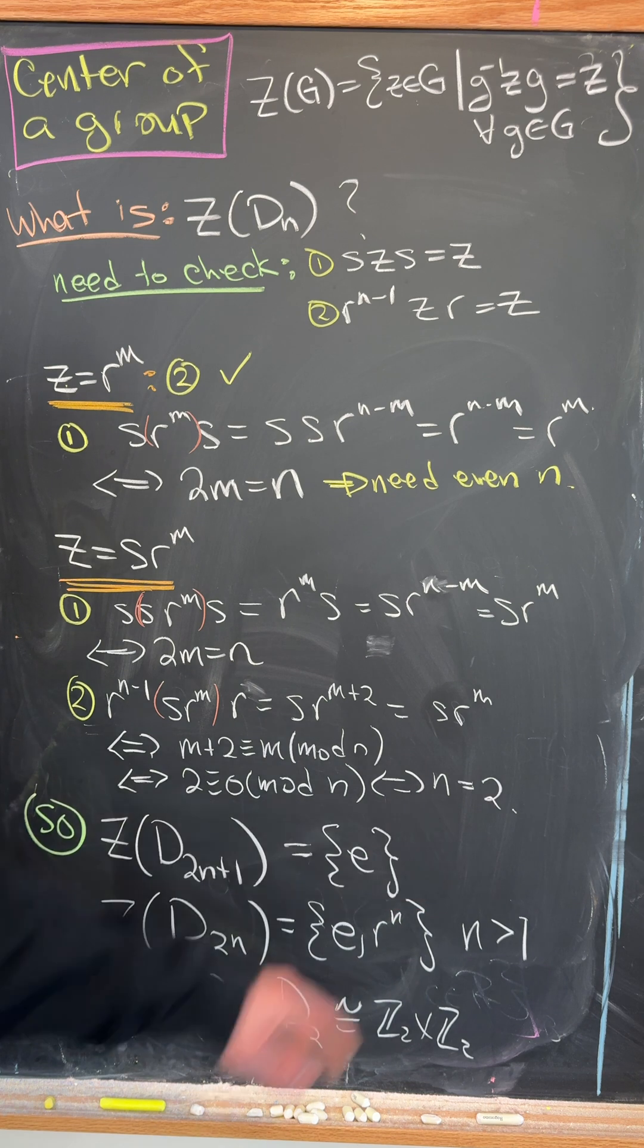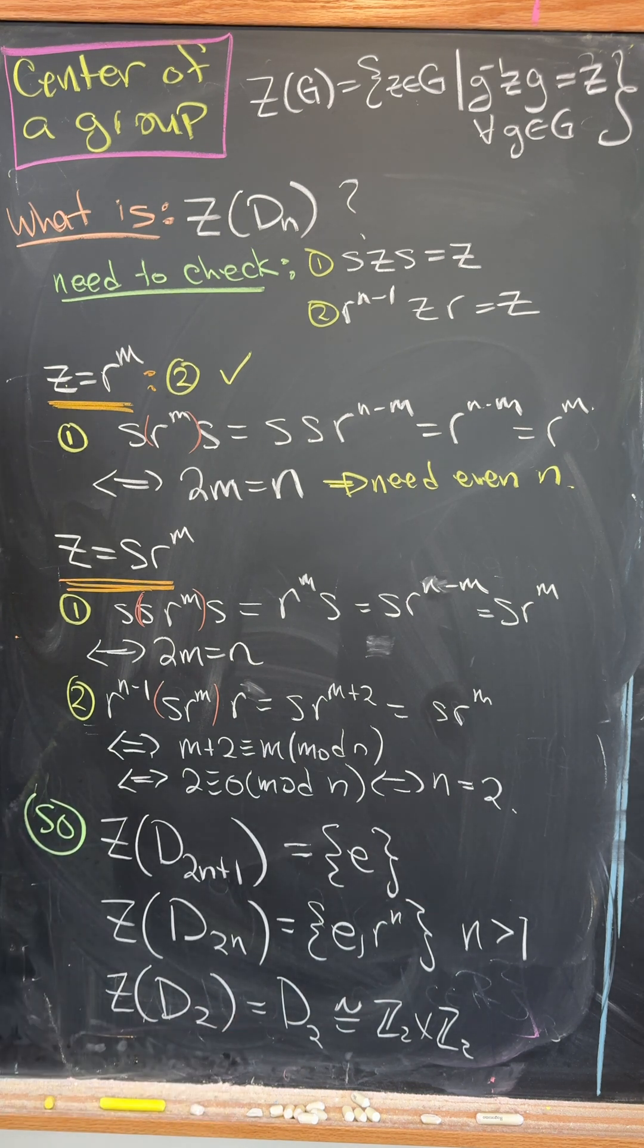Whereas in this case, when N is equal to two, the center is the whole group. But of course that's obvious because this is E2 cross E2.